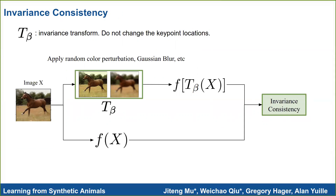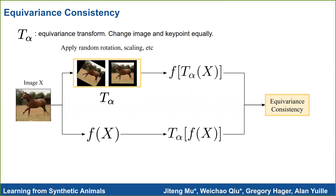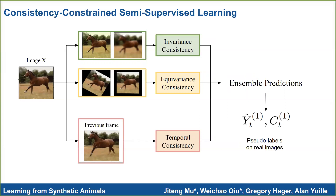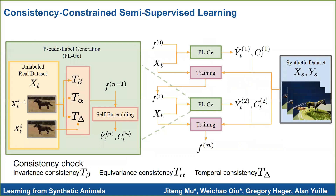We propose three consistencies. Given an image X, we can apply transformations that do not change keypoint locations, such as color perturbation and Gaussian blur — we call this invariance consistency. Similarly, we can apply transformations where the image and keypoints are transformed equally, such as random rotation and scaling — we call this equivariance consistency. When videos are available, we can further approximate the transformation between two consecutive frames by optical flow and apply temporal consistency. We jointly apply all three consistencies and ensemble all predictions to refine the weak model's prediction. In practice, we generate pseudo-labels and train our model iteratively, obtaining a strong model after n iterations.